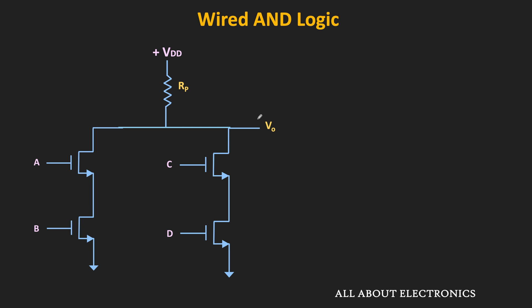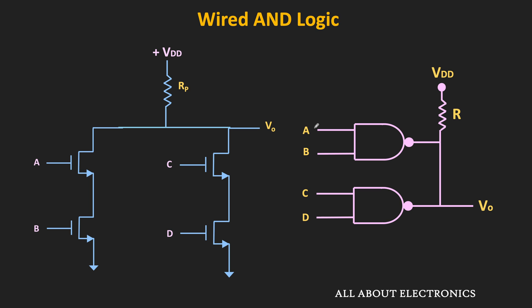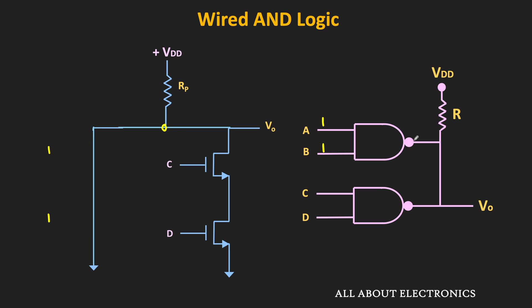Looking at the equivalent logic circuit — let's say inputs A and B are both equal to 1. For this first NAND gate, since both inputs are 1, both NMOS transistors will turn on and act as a short circuit. The output of this first NAND gate is then connected to the ground terminal, so the output equals 0. Since this node is connected to ground, the overall voltage at this node becomes 0V. That means irrespective of inputs C and D, the overall output Vout is equal to 0 — whenever one output is logic 0, the overall output also becomes 0.